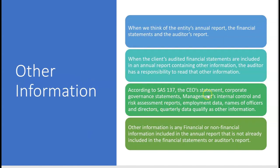Specifically we're talking about the CEO's statement, corporate governance statements, management's internal control and risk assessment reports, employment data, names of officers and directors, and quarterly data — this is what qualifies as other information. This information could be financial or non-financial, and the auditor has the responsibility to read it.